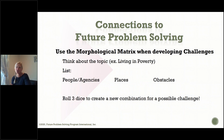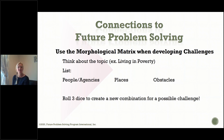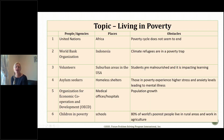So how do we use the morphological matrix in future problem solving? I'm going to give you an example of how to use it when developing challenges. The topic some of our students are studying right now is living in poverty. After reviewing the readings, research, and resources, I want to come up with new and unique challenge ideas. So I listed people and agencies, places, and obstacles. Some people I noted in the research: the United Nations, the World Bank, volunteers, asylum seekers, the Organization for Economic Cooperation and Development, and children in poverty.